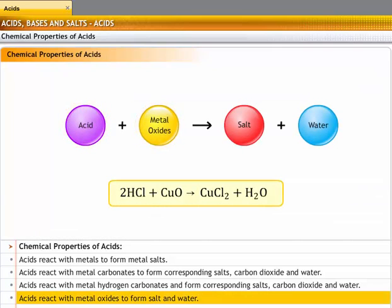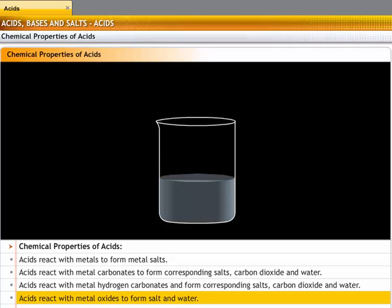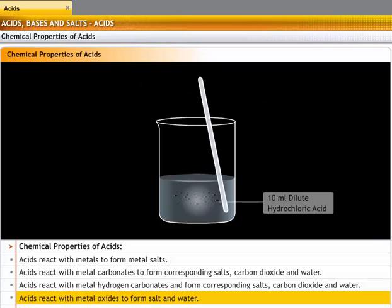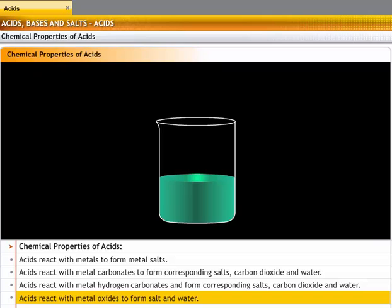Acids react with metal oxide to form salt and water. Let's conduct an experiment to prove this chemical property. Take 10 ml dilute hydrochloric acid in a beaker. Add 2 grams of copper oxide to the beaker. Stir the mixture continuously. You will find that the black copper oxide disappears and a blue-green solution is formed in its place. This blue-green solution is copper chloride.